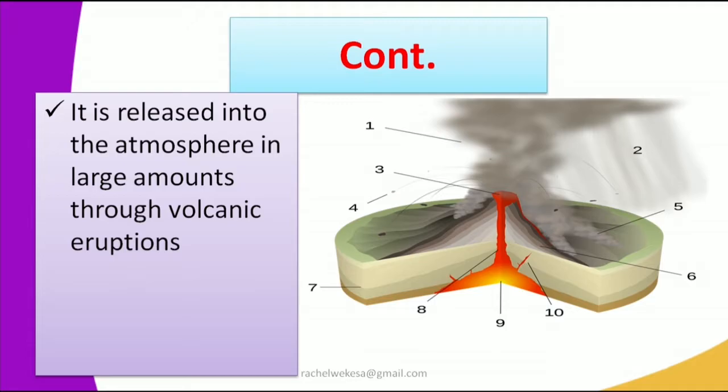The next image shows a volcanic eruption. This is the Earth's surface, with the magma shown in red and yellow. This magma becomes too hot to remain under the Earth's surface and is ejected outside in the form of ashes and other gases that are released into the atmosphere.